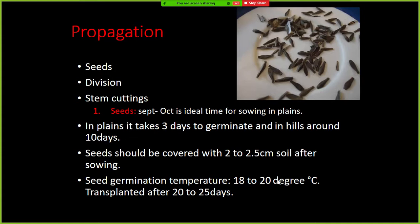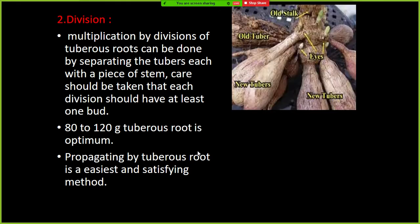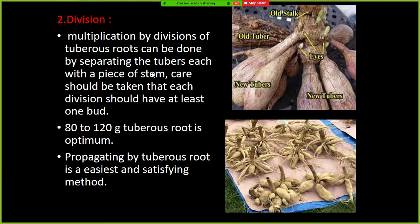For germination, constant temperature of 18 to 20 degrees Celsius is needed for one week. Multiplication by division of tuberous roots can be done by separating the tubers, each with a piece of stem. Care should be taken that each division should have at least one eye bud.